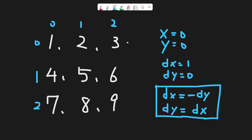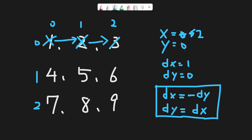Let's begin. First of all, we are standing at position 0, 0. We already visit this position. Then, if the next position is not out of bounds, we just add dx to x and dy to y. So the next position should be 1, 0. We move there and find 2, so we visit it again. Next position is still not out of bounds, so we move to position 2, 0 and visit it.